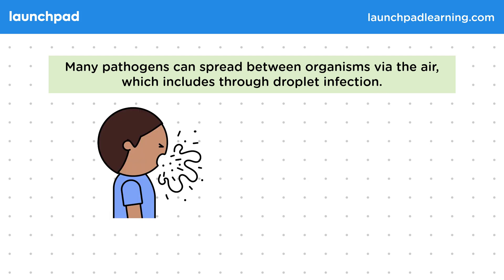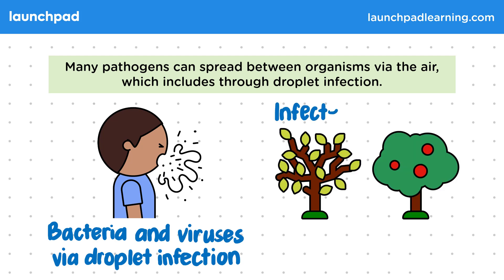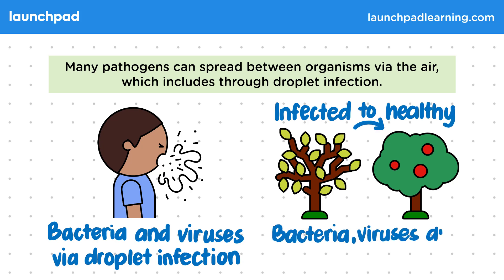This diagram shows how bacteria and viruses can spread via droplet infection. This is when an infectious person coughs, sneezes, or even breathes, releasing little droplets into the air carrying the pathogen. Plants can be equally infected by bacteria, viruses, and fungal spores in the air.